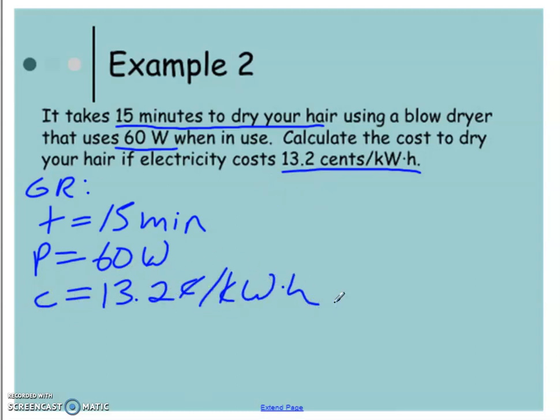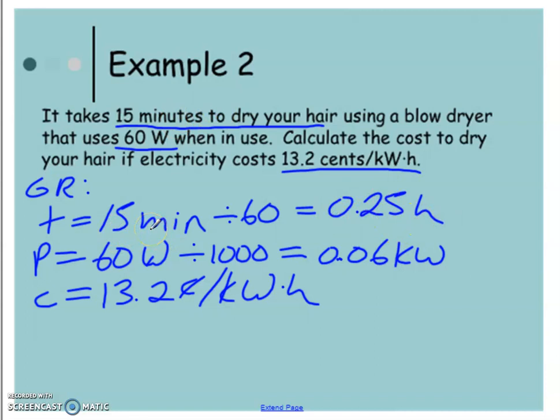Calculate the cost to dry your hair if electricity costs 13.2 cents per kilowatt hour. So let's make sure we have everything in the correct units. So this 60, we know we need in kilowatts. So we're going to divide by 1,000. So we should get 0.06 kilowatts. 15 minutes, we need this in hours. So what that means is we have to consider there are 60 minutes in one hour. So if we divide this by 60, we'll get how many hours this 15 minutes is taking up. So it's 0.25 hours. So it's basically a quarter of an hour.